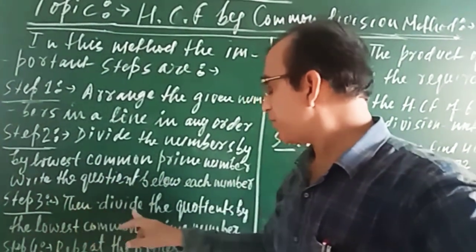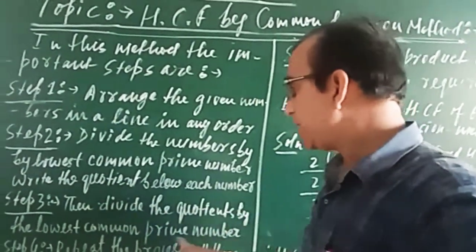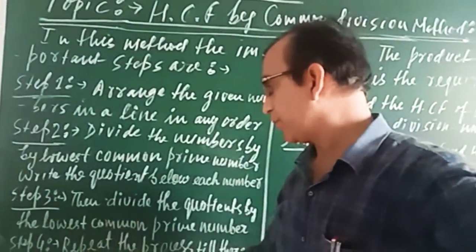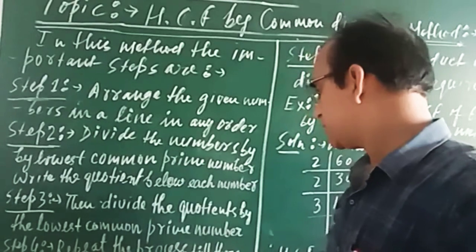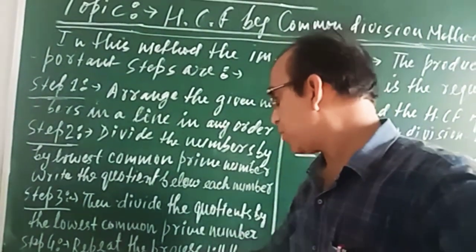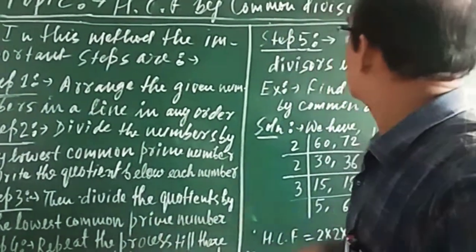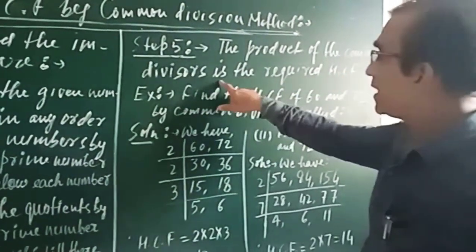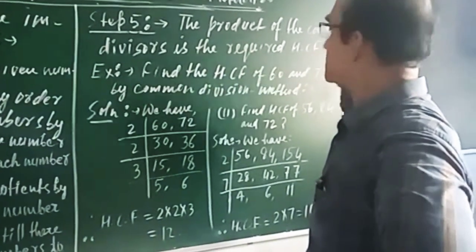Step 3: Divide the quotient by the lowest common prime number. Step 4: Repeat the process till there are no common prime numbers to divide by. Step 5: The product of the common divisors is the required HCF.